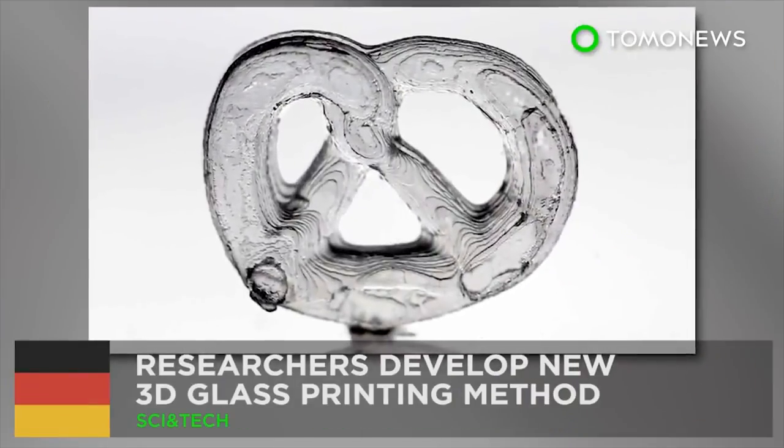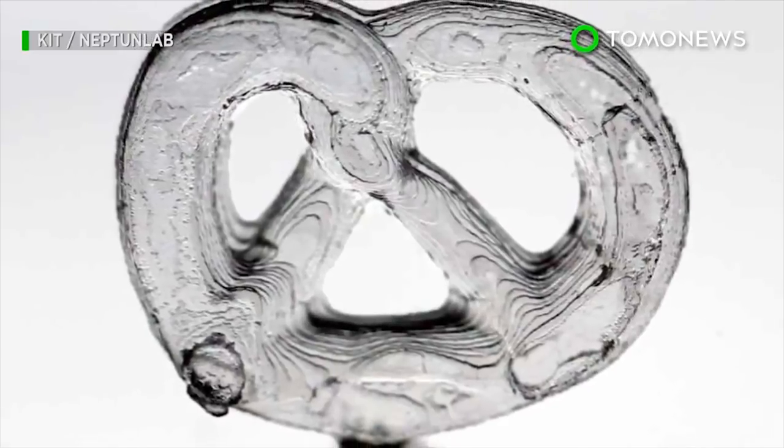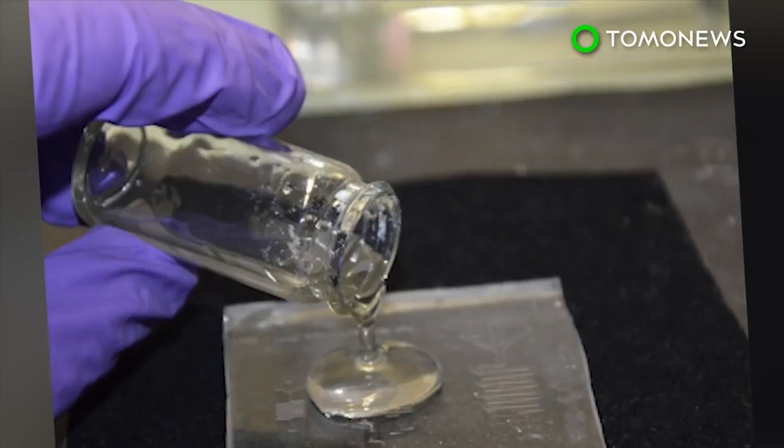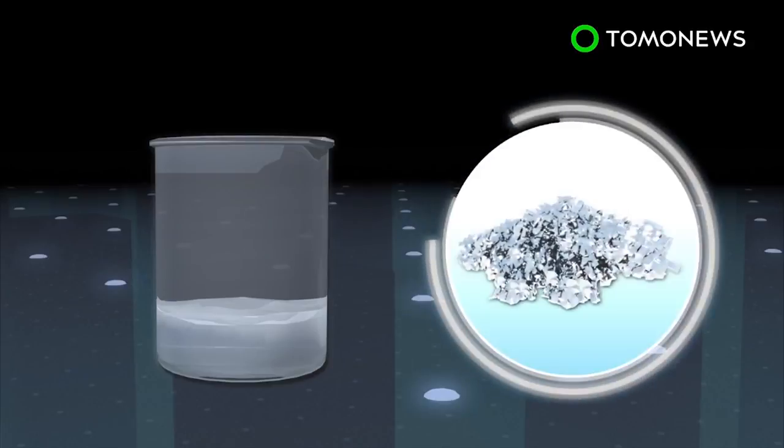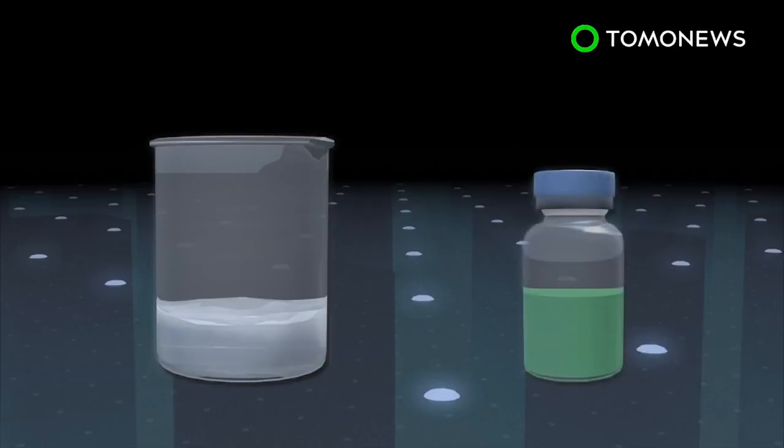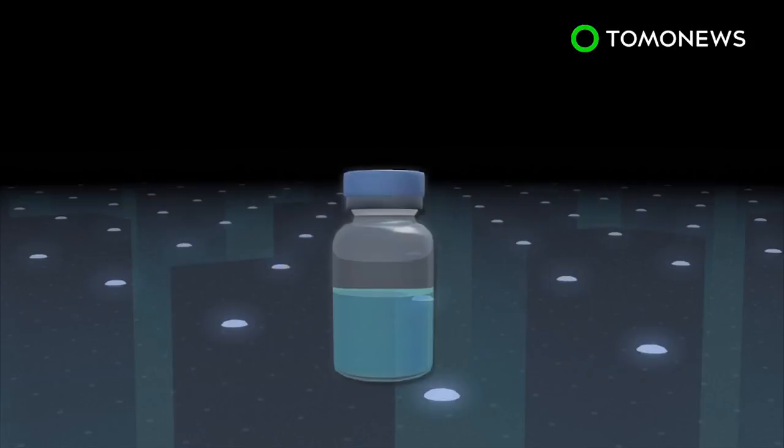Now we can make glass with a 3D printer. A group of German researchers have developed a new method for making glass with 3D printing technology. The 3D printed glass is made from a mixture of glass nanoparticles and a photo-curable liquid, which acts as a binding agent.